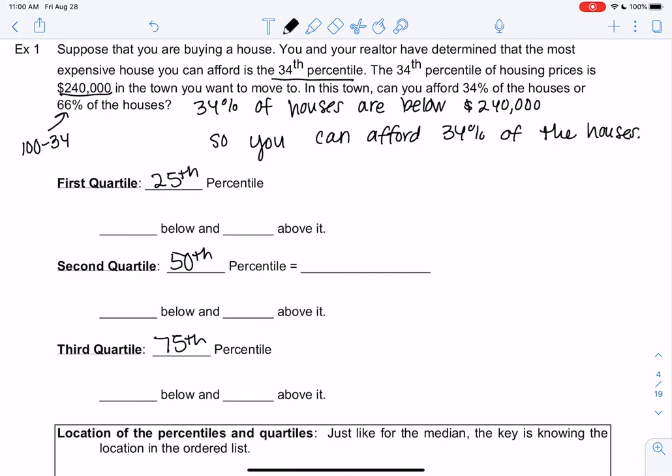The first quartile is the 25th percentile, meaning 25% is below and 75% is above. In terms of data, if it were houses, it means you can afford 25% and 75% are too expensive. If it's your height, it means you're taller than 25% of people, but 75% of people are taller than you.